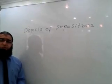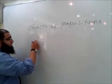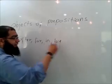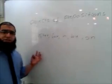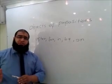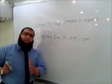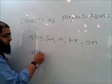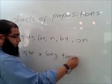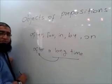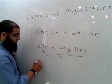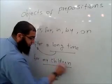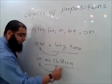Now, objects of prepositions. When we speak about prepositions, prepositions are like: 'after' is a preposition, 'for' is a preposition, 'in' is a preposition, 'by' is a preposition, 'on' is a preposition — all these are prepositions. When we speak about objects of prepositions, we mean nouns or pronouns that come after the prepositions. For example, we can say something like 'after a long time.' This is a noun that comes after a preposition, so we call it an object of a preposition.